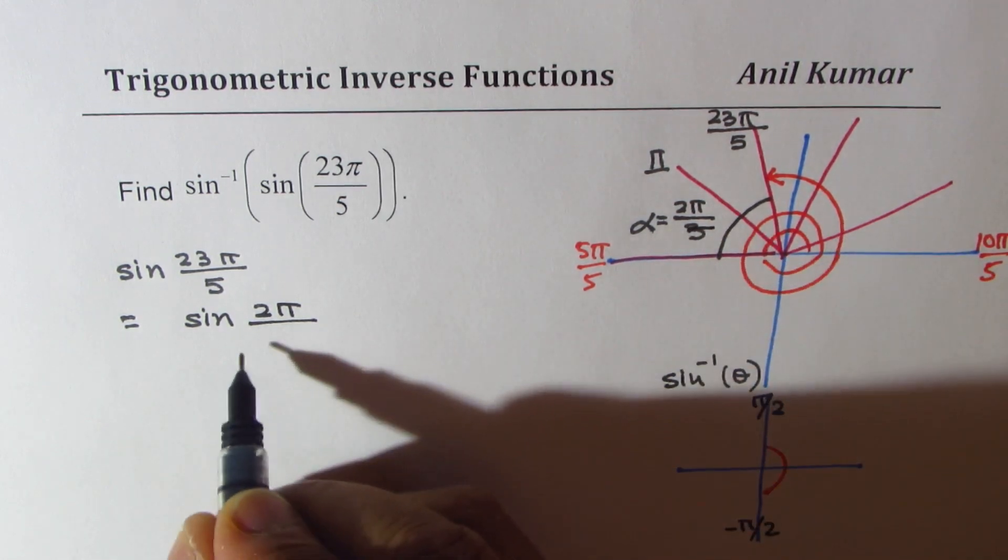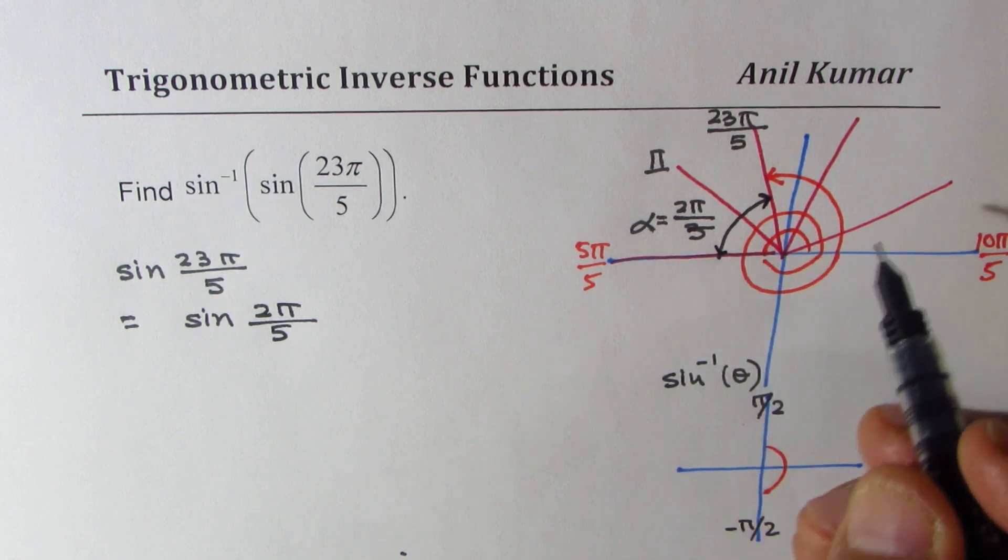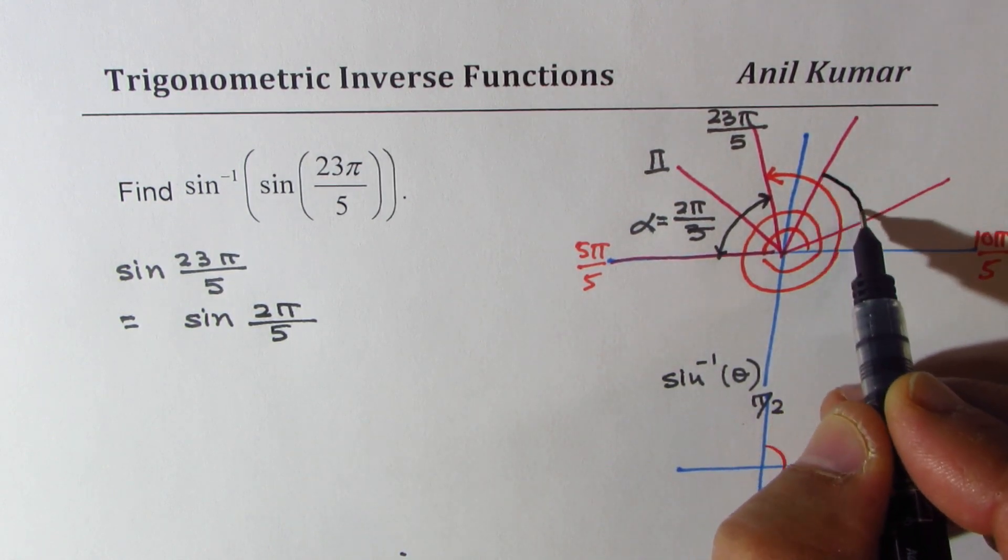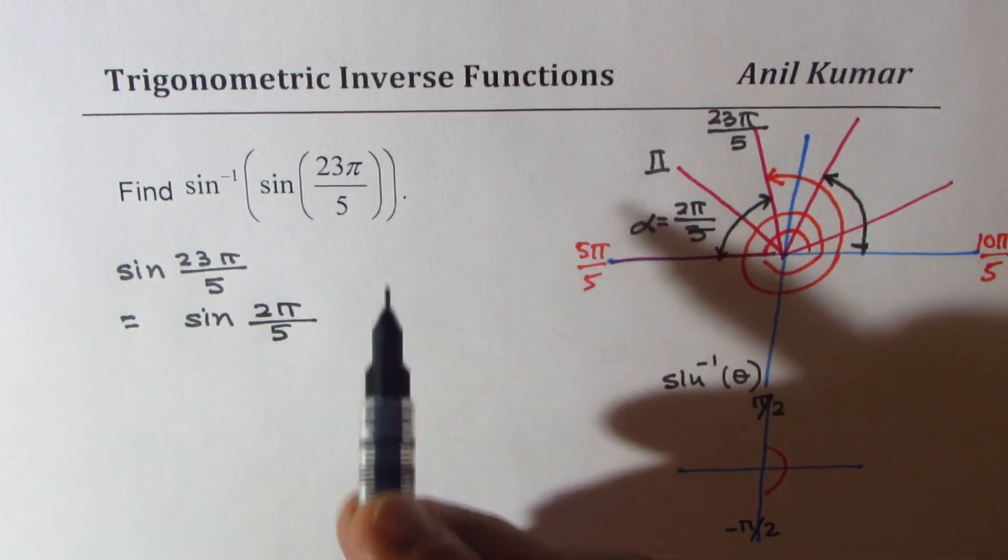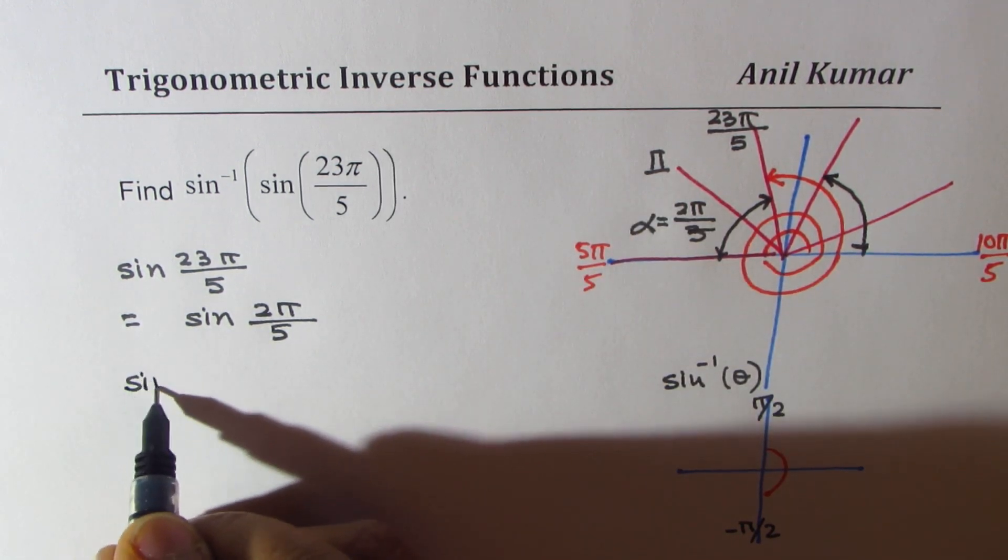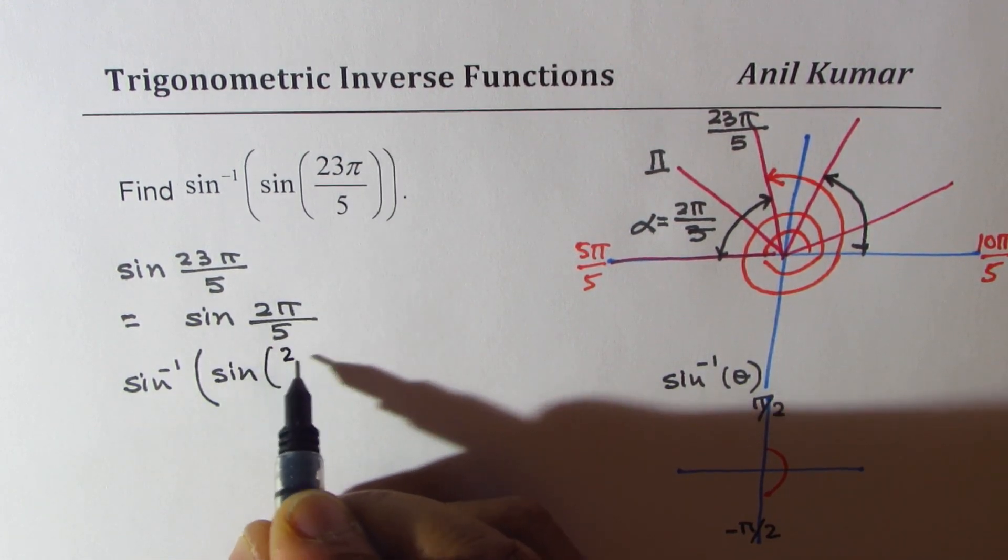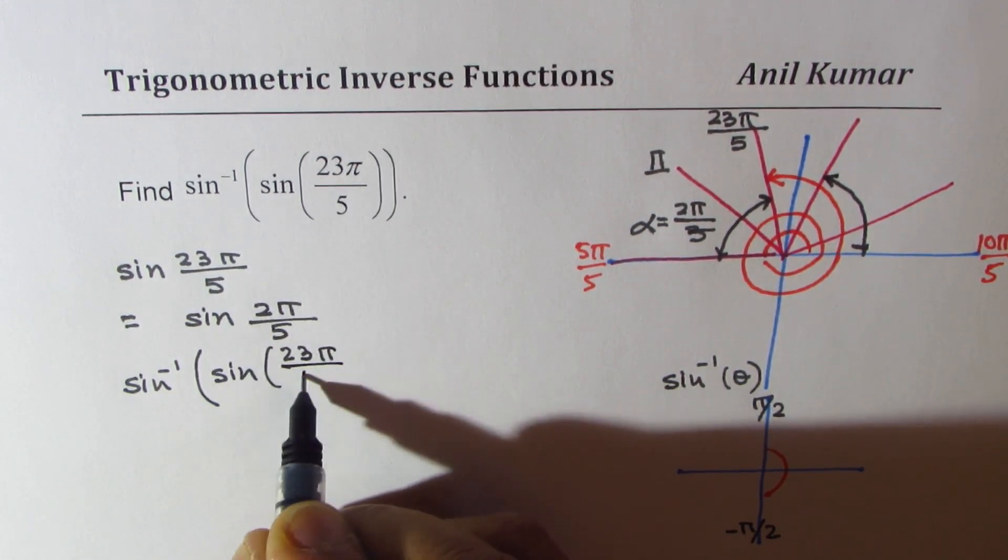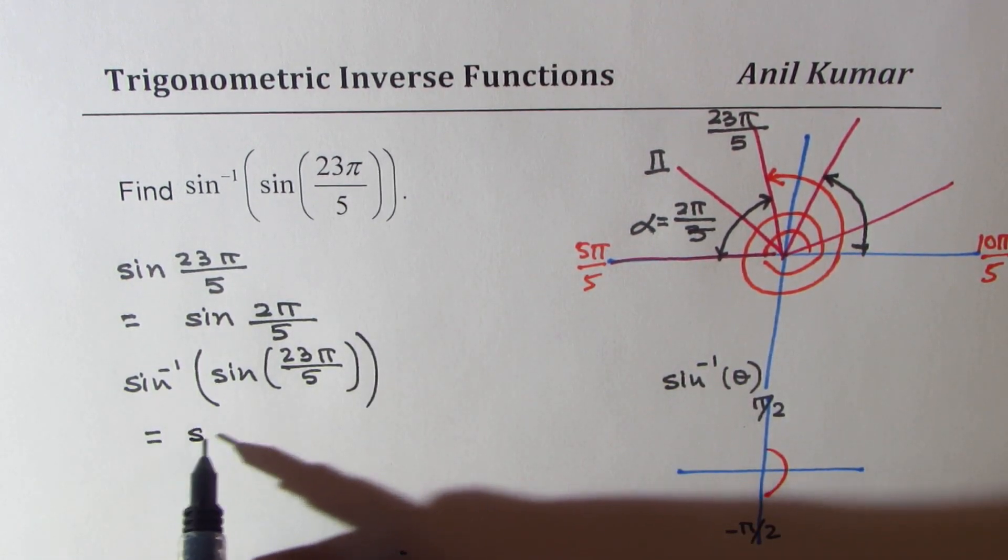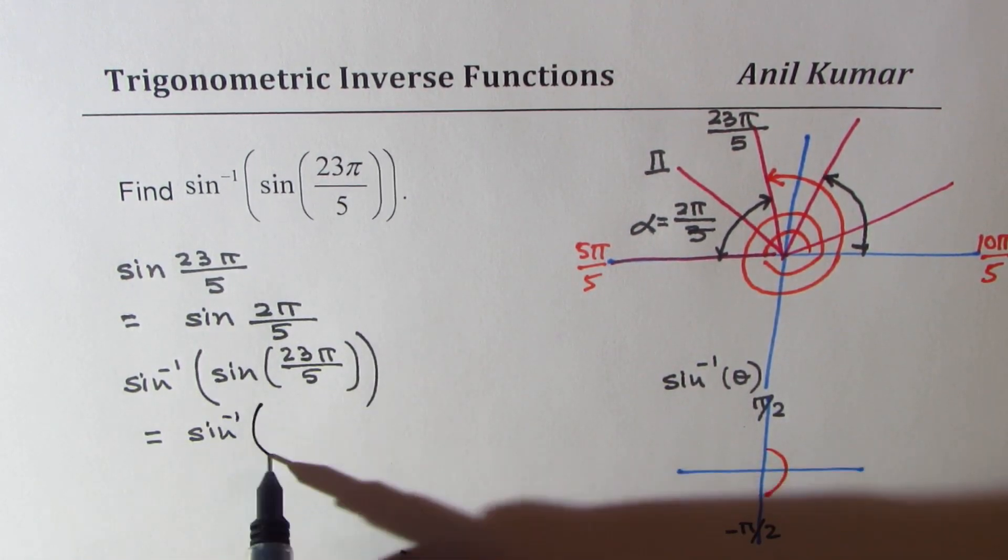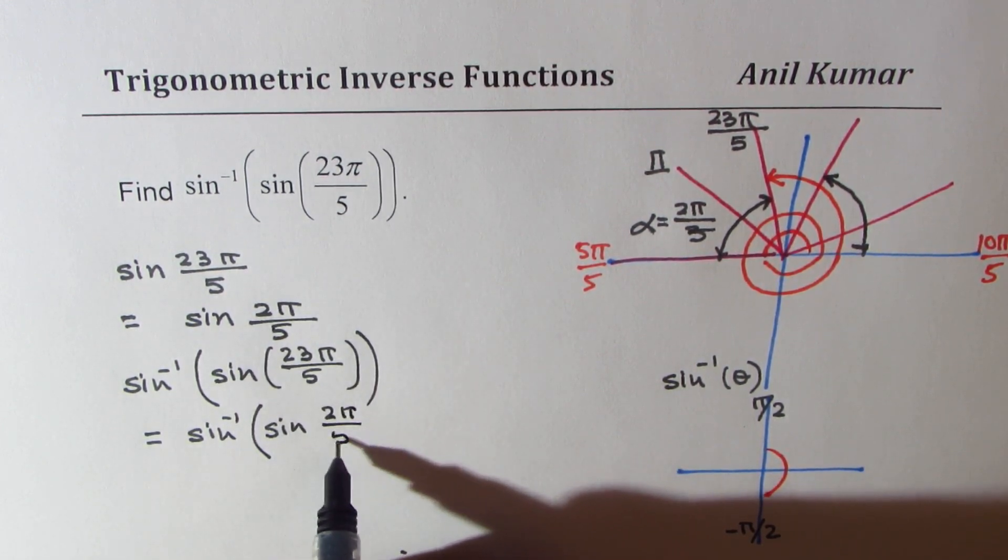Correct? So, so this much. That means it is same as this point. So what you could do is, you can write sine inverse of sine 23π by 5 as equal to sine inverse of sine 2π by 5. Is that clear?